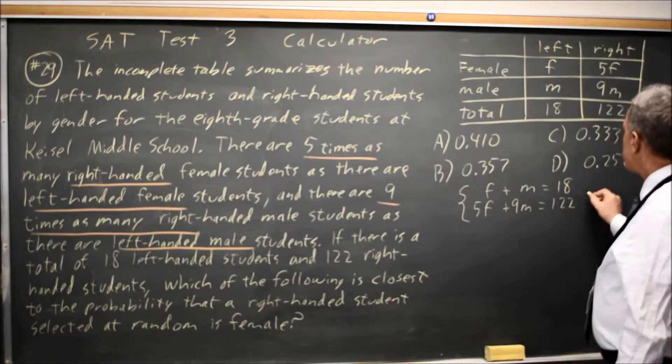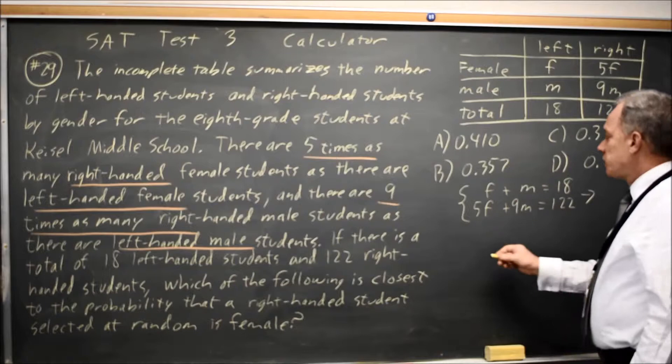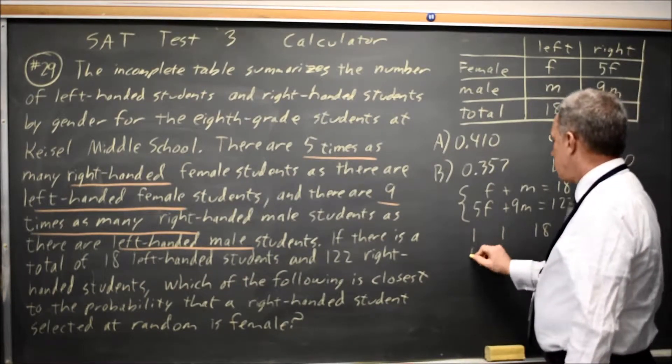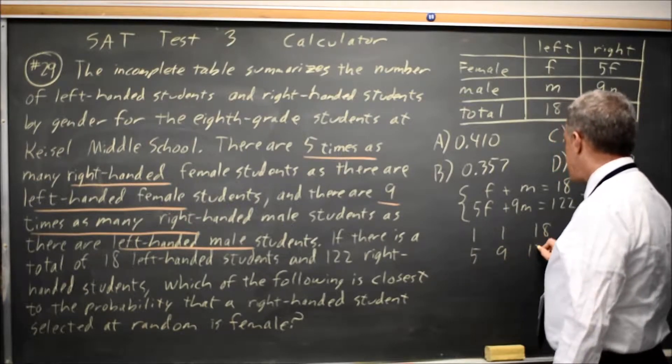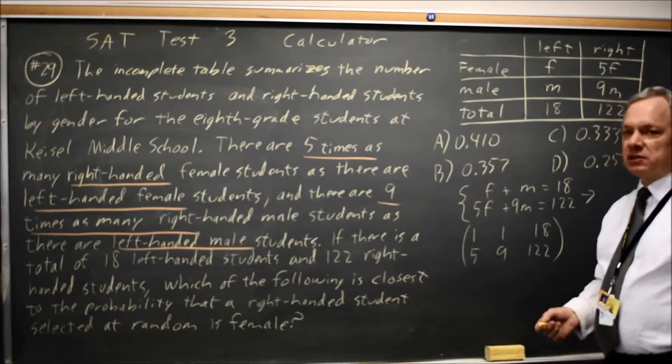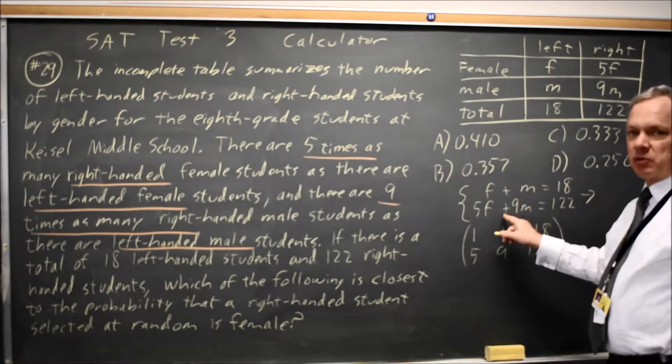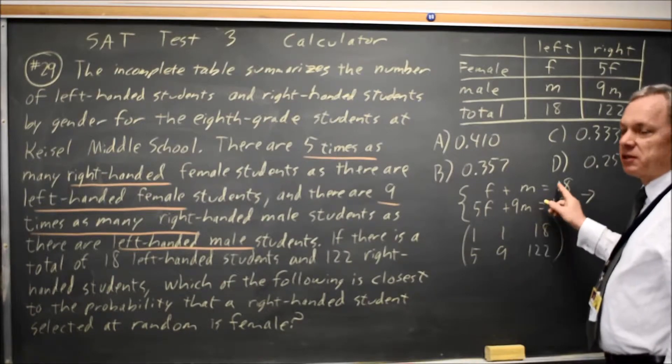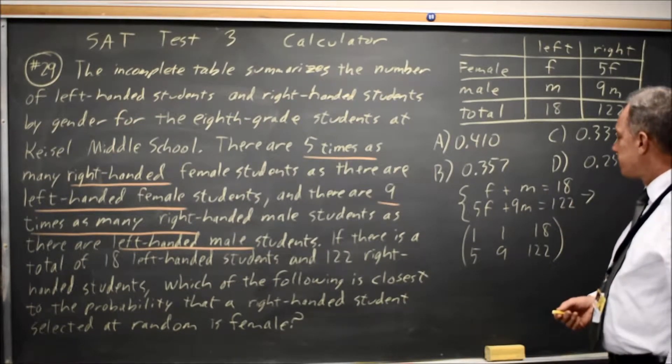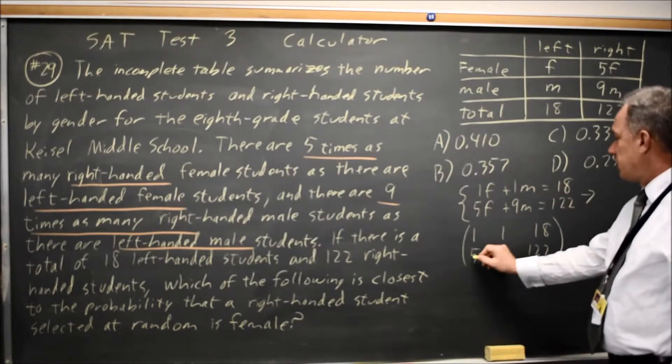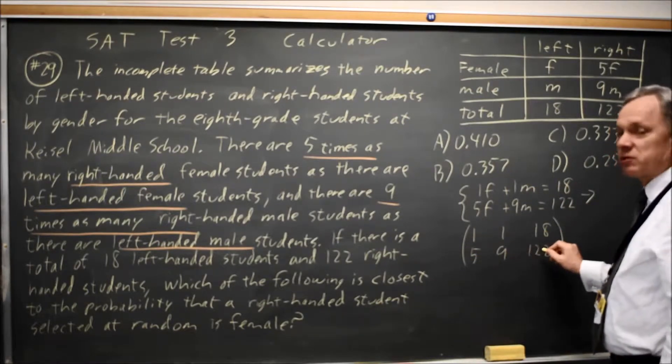I can rewrite this system in matrix form, taking the coefficients: 1, 1, 18, 5, 9, 122. You're allowed to do this only when the variables are in the same order for both equations, and then an equal sign, and then the constant without any variable. So this corresponds to 1F plus 1M equals 18, and 5F plus 9M equals 122.